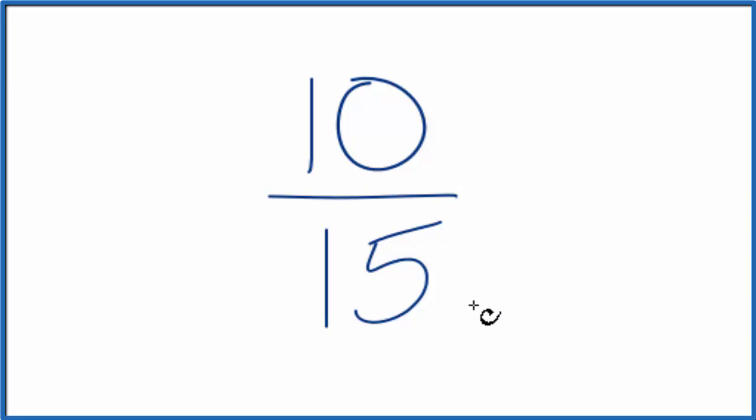When we look at 10 and 15, we want to find a common factor that goes into both 10 and 15. 5 would go into 10 and 15.